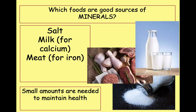The same with minerals — they are also needed in smaller amounts to maintain health, but for different reasons. We're a bit more specific with minerals. You need salt in your body. You need milk because it contains the mineral calcium, which is needed for healthy bones and teeth. You also need meat for iron, although iron can also be obtained through supplements — so if you're a vegetarian, you don't need meat.